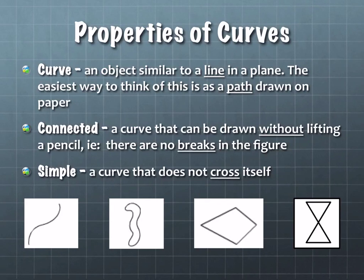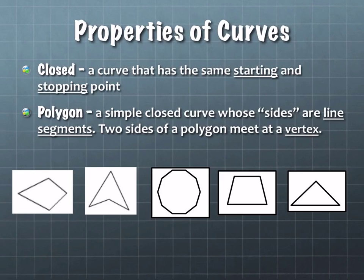A simple curve is one that does not cross itself. The last description is closed — a curve that has the same starting and stopping points. We're going to come back to polygon, so just write starting and stopping in there.